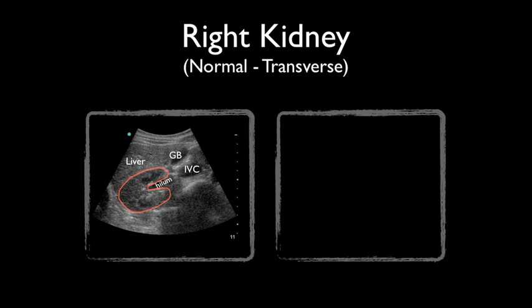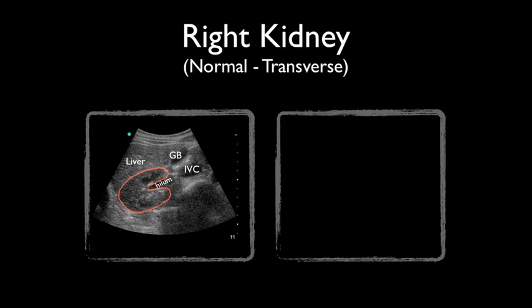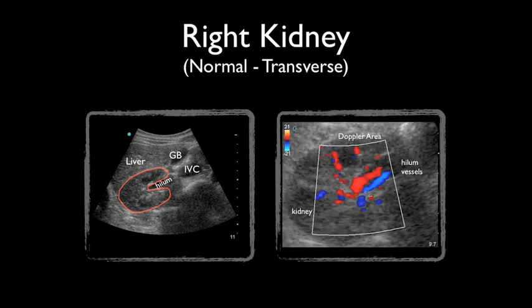Ureters are usually not well visualized with ultrasound, but when distended may appear as tubular structures extending inferiorly from the kidney. From the transverse position, you can see if the kidney has any blood flow. On the ultrasound console, find the color button and simply place the color Doppler box around the area of the hilum.